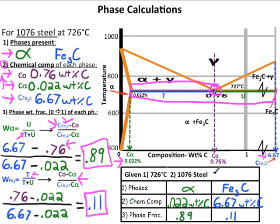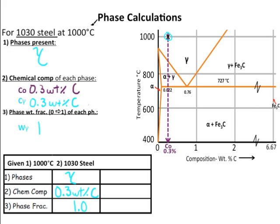Once you have all your solutions, it's easy to put them in a table like so. This column represents all the values for alpha, and this column represents all of the values for iron carbide. Now let us move on to an example of a hypo-eutectoid steel. For 1030 steel at 1000 degrees Celsius, calculate the phases present, the chemical composition of each phase, and the phase weight fraction of each phase. 1030 steel means you have 0.3 weight percent carbon, and at 1000 degrees Celsius you are at this X right here, so your phase present is just single-phase gamma. The chemical composition of gamma is the same as the overall composition, which is 0.3 weight percent carbon, and your phase weight fraction is 1.